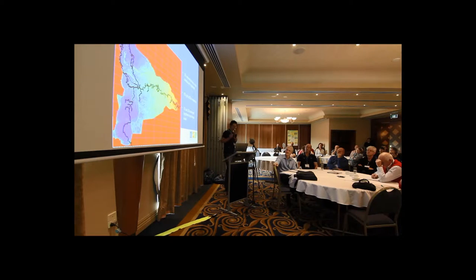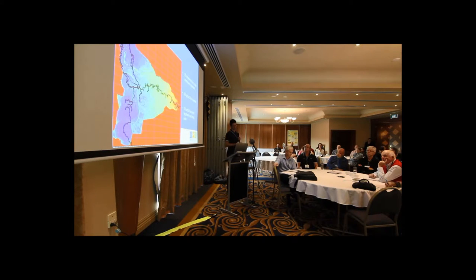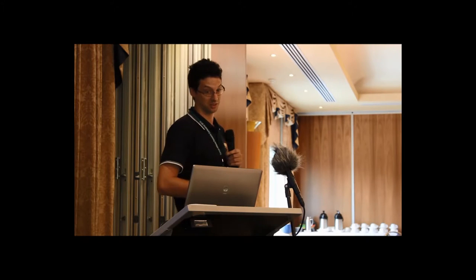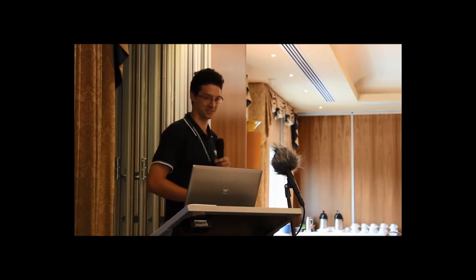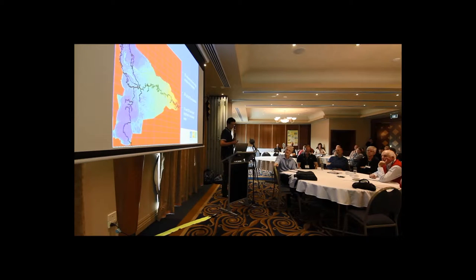This is a snapshot of what the model looks like. All the colours in the background are basically the LIDAR grid, resampled at 50 metres — so 50-metre grid squares, each with its own topographic value. We've developed grids a lot finer than that, down to one-metre resolution, which gives fantastic resolution on results. But at this scale that's not achievable — if you tried that, it would take about a year to run a model simulation, which is obviously not practical. The black lines are the river and major creeks and all of the regulators, modelled in a little more detail in a one-dimensional model which is linked to the two-dimensional model.